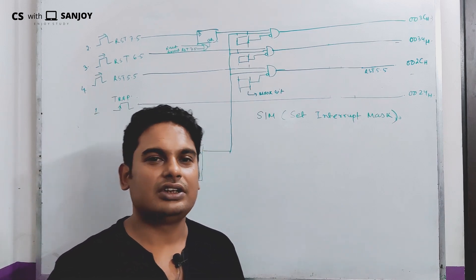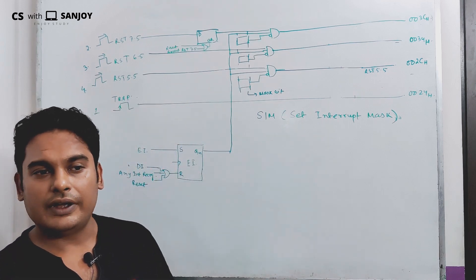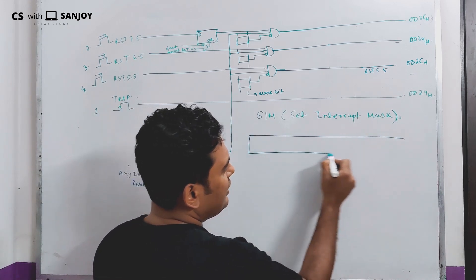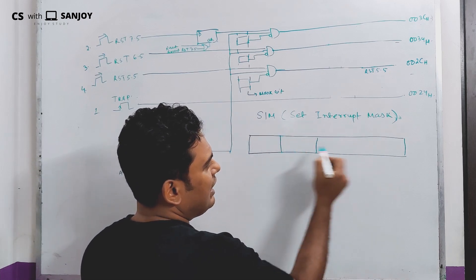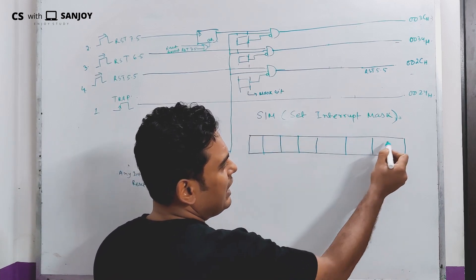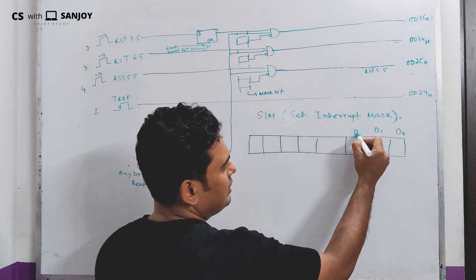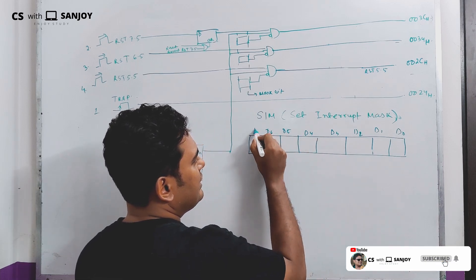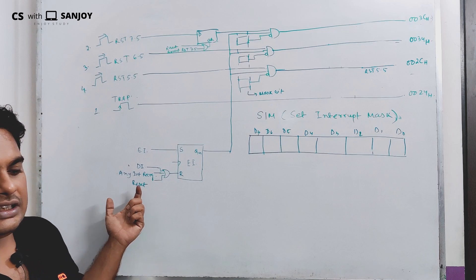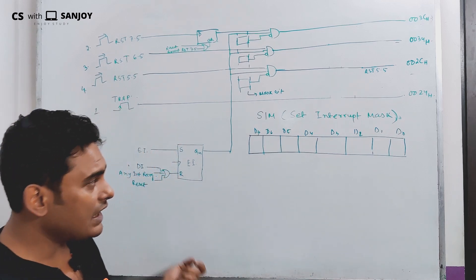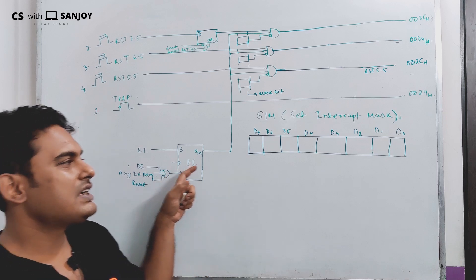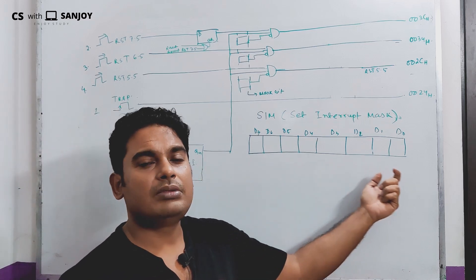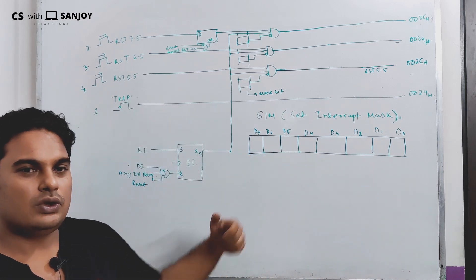This instruction is Set Interrupt Masks. The word is 8-bit and it should be in the accumulator. The accumulator has bits D0, D1, D2, D3, D4, D5, D6, and D7 — so this is our 8-bit accumulator. We can specify controls using these 8 bits through the same instruction.